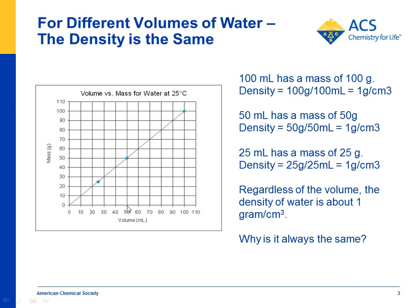50 milliliters of water has a mass of 50 grams — you do the math and it also equals 1 gram per cubic centimeter, and the same with 100. So kids see the straight-line relationship between the volume and the mass. That means regardless of the volume, you're always going to have a density of 1 gram per cubic centimeter.